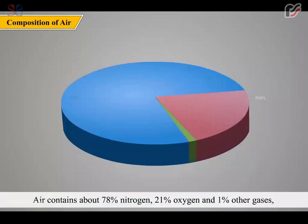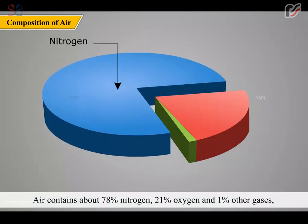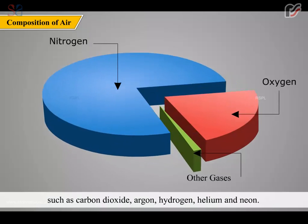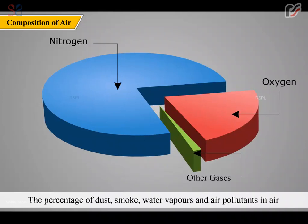Air contains about 78% nitrogen, 21% oxygen and 1% other gases such as carbon dioxide, argon, hydrogen, helium and neon. The percentage of dust, smoke, water vapors and air pollutants in air may vary from place to place.